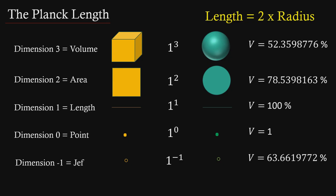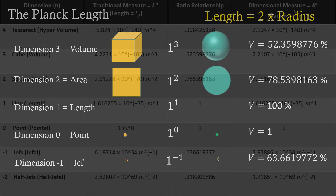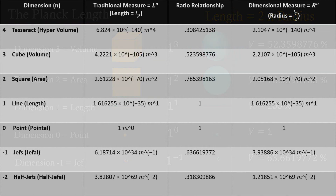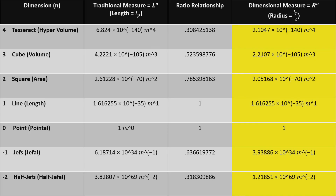Those relationships are dependent on the radius in dimension one being half the length. We can all do the math using the Planck length in both traditional and dimensional measure, but if what Wikipedia states is true, then all the calculations using a radius of half the Planck length have a chance of being wrong due to quantum uncertainty.